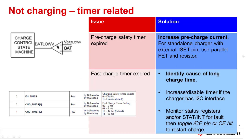The third set of issues are timer related. The first is that the pre-charge safety timer may have expired. This can happen when the pre-charge current is not enough for the battery voltage to cross over to the fast charge current. The solution is to increase the pre-charge current. For I2C, you can increase the pre-charge current via a register, but for a standalone charger with an external ISET pin, you want to use a parallel FET and a resistor to increase that current.